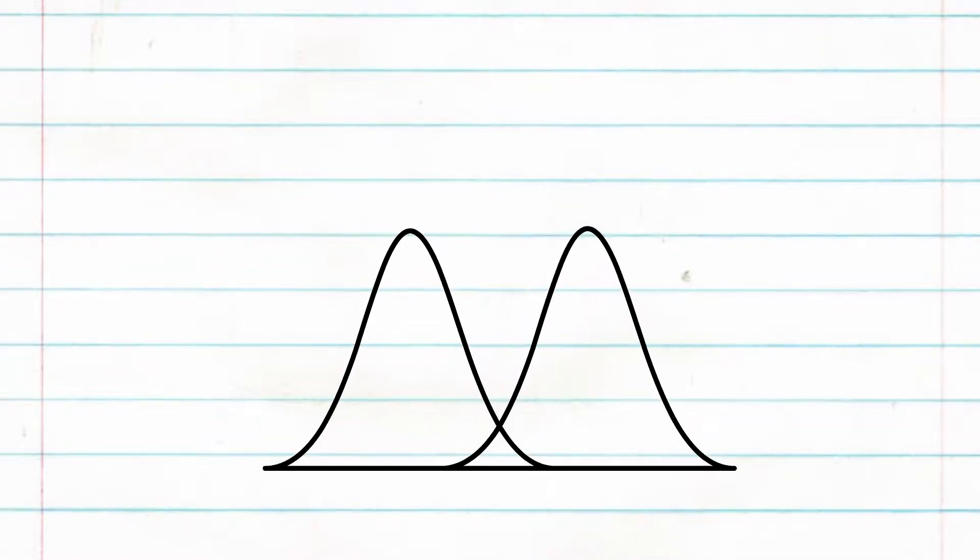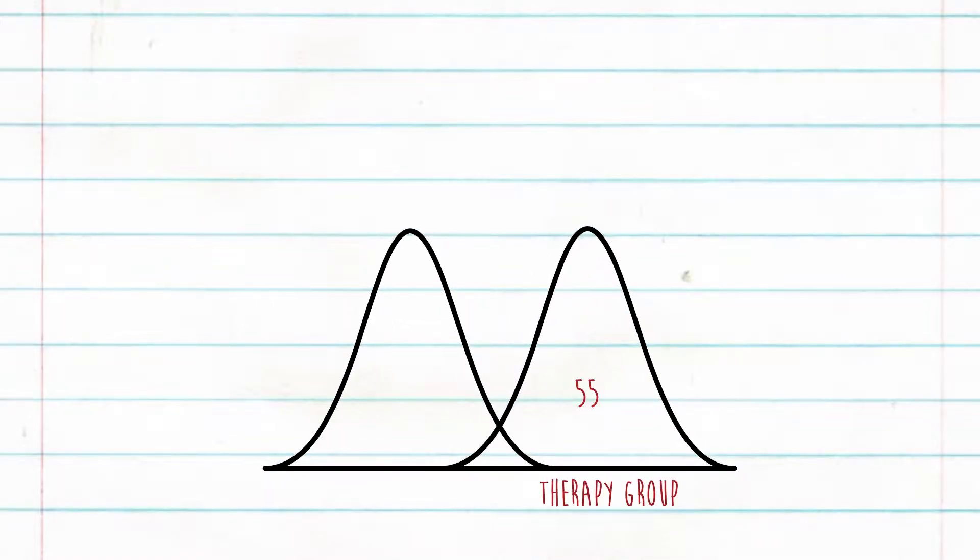Here's the logic of classical statistics. Let's say we had a mean of 55 for the therapy group and a mean of 50 for the no-therapy group — or let's simplify and say this is a mean difference of five. Using this value alone, we actually don't know if the therapy worked. But what we can do is figure out the probability of obtaining a difference of five if it did not work. That seems a little backwards — oh, you bet it is.